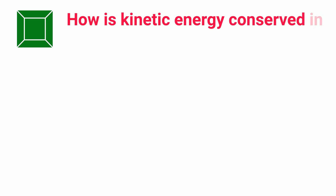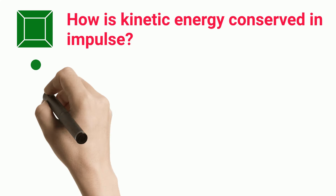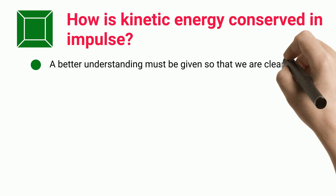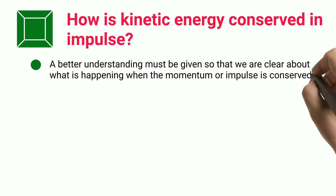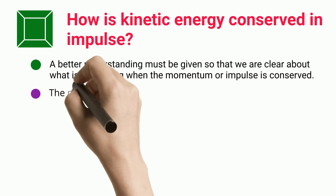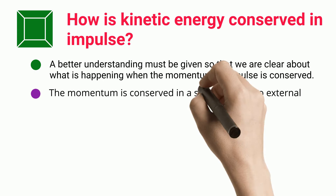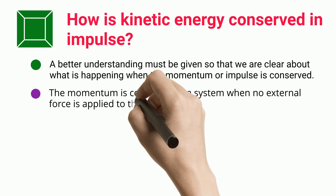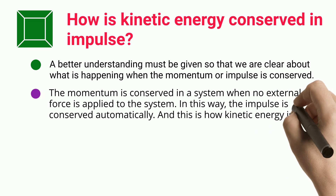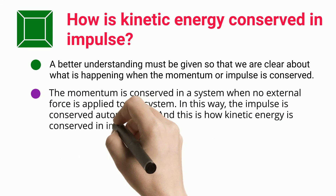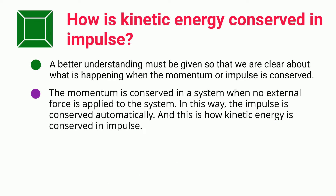How is kinetic energy conserved in impulse? A better understanding must be given so that we are clear about what is happening when the momentum or impulse is conserved. Momentum is conserved in a system when no external force is applied. In this way, the impulse is conserved automatically, and this is how kinetic energy is conserved in impulse.